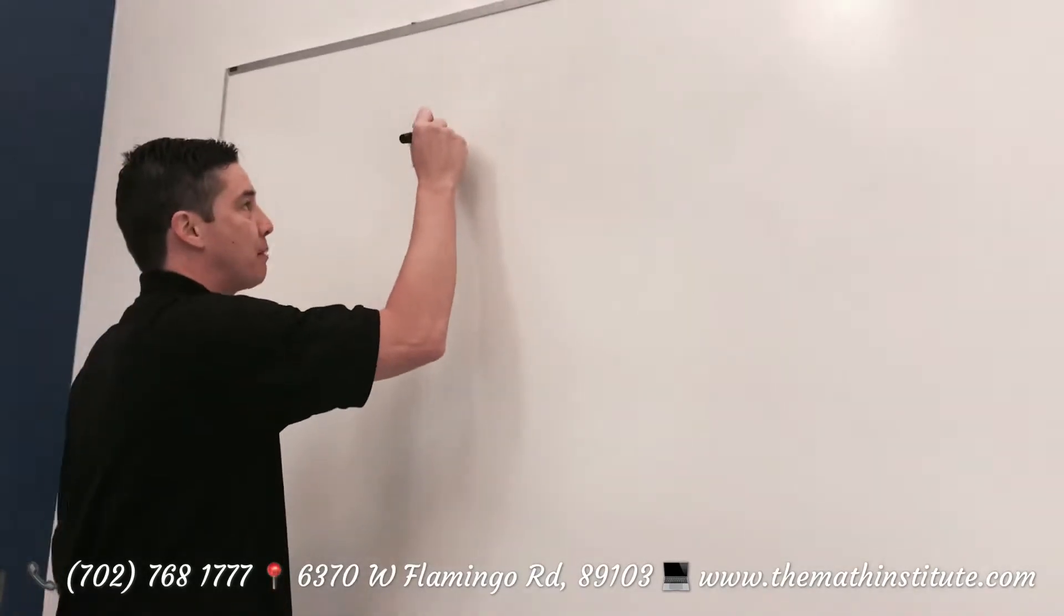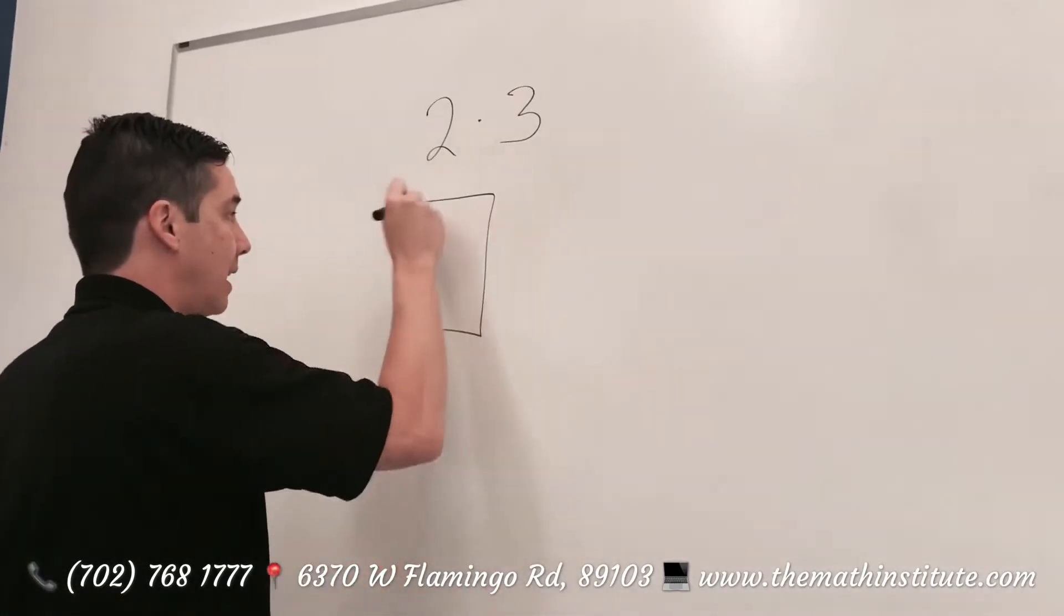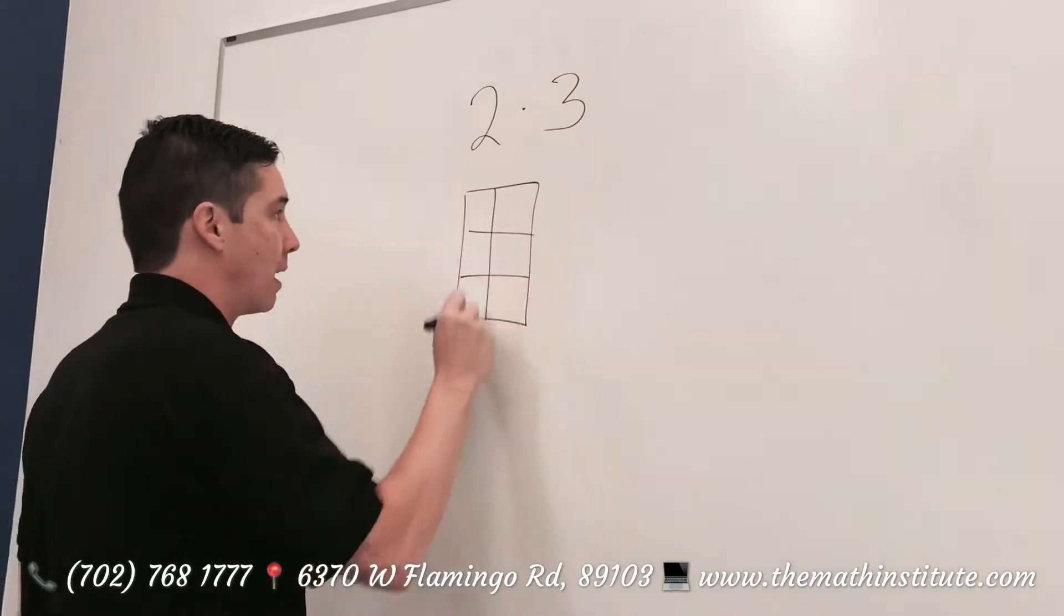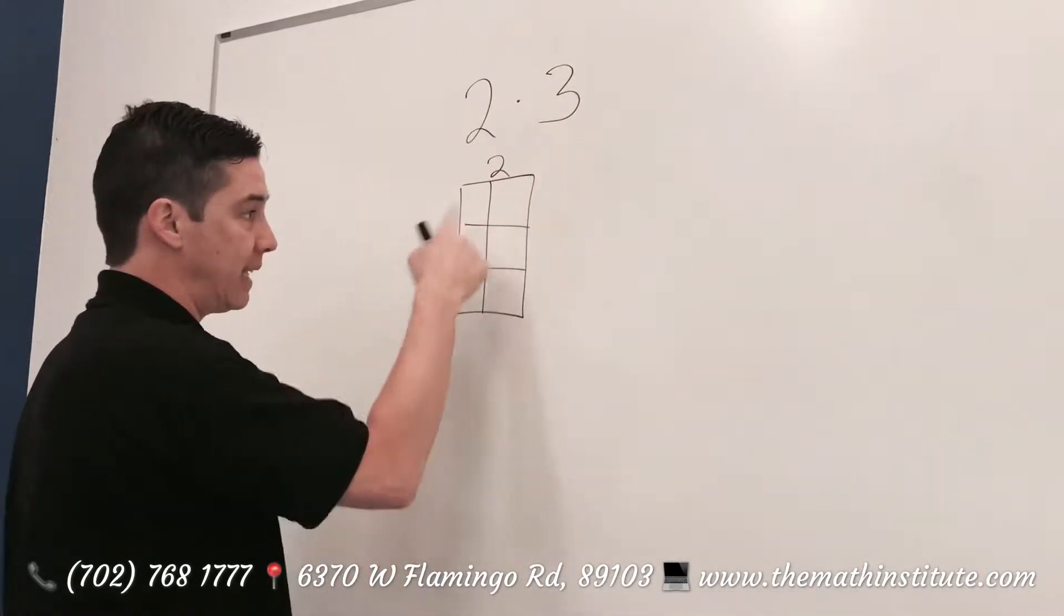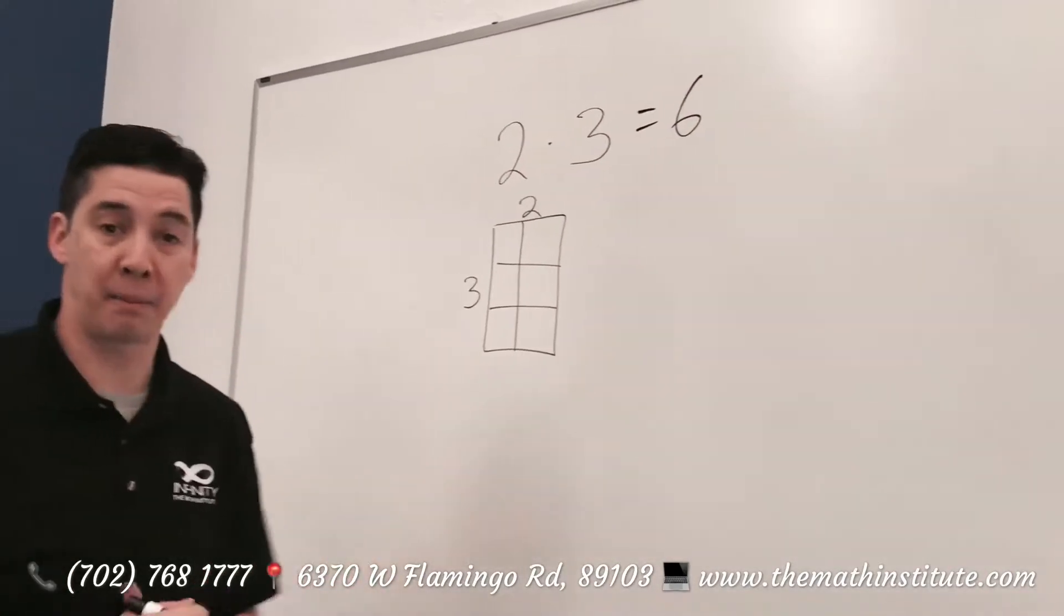So let's take a regular multiplication problem, 2 times 3, all right? We don't know what that looks like. 2 times 3 is 6, as exemplified right here.